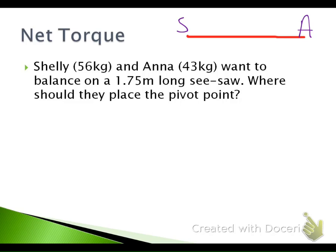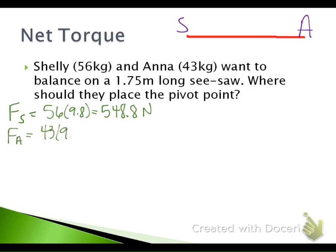When sitting on a teeter-totter, the only force acting on you is gravity. The force on Shelly is her mass times gravity: 56 times 9.8 equals 548.8 newtons. The force on Anna is her mass times gravity: 43 times 9.8, which gives us about 421.4 newtons.